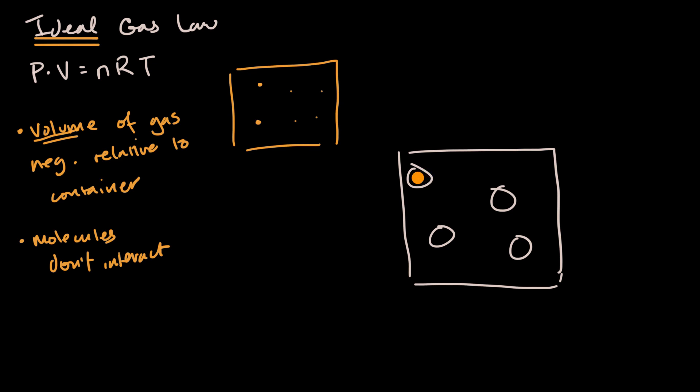They're definitely going to repulse each other. They can't occupy the same space at the same time, but they might attract each other at some points or repulse each other at other points. And so in this situation, where we can't make these assumptions, we're going to have to modify the ideal gas law.